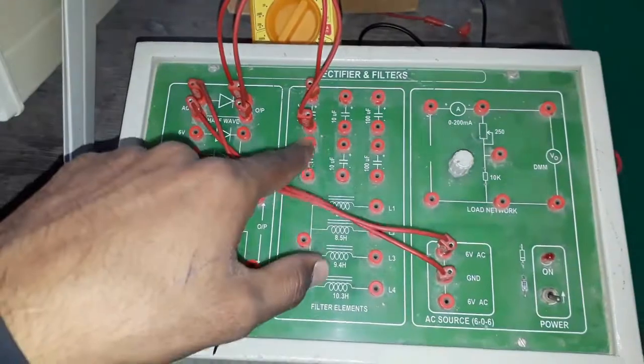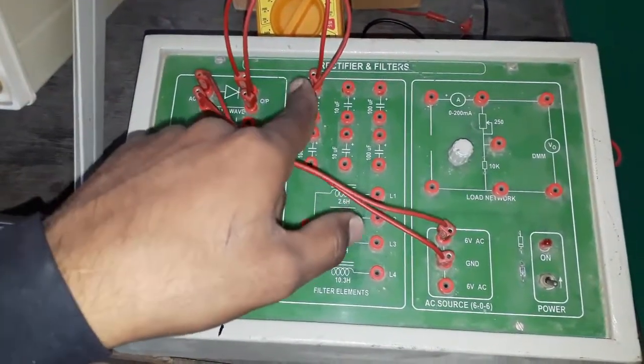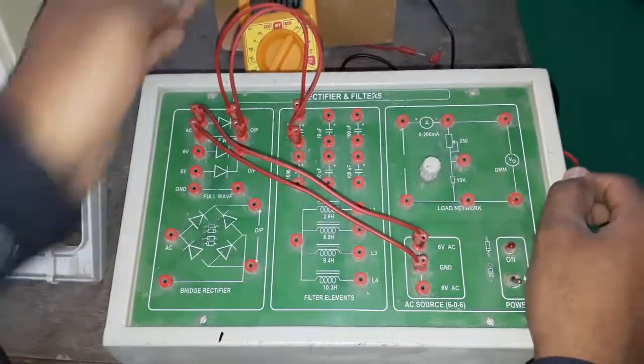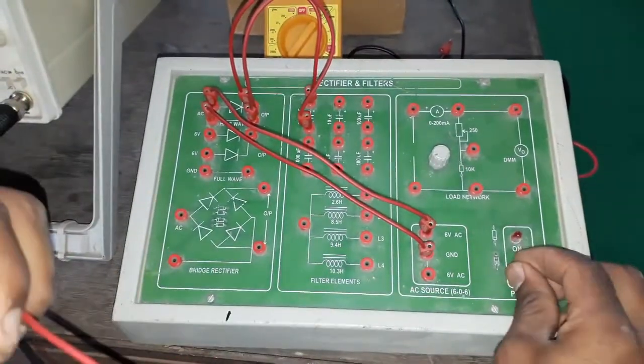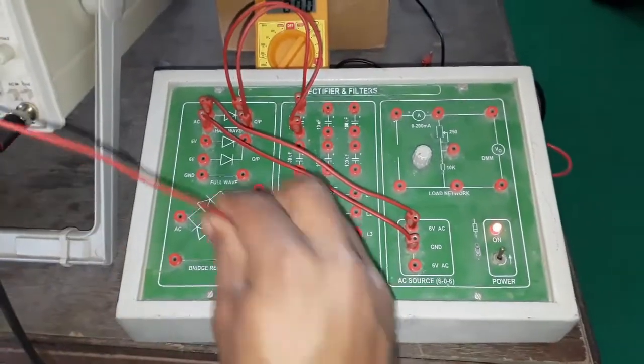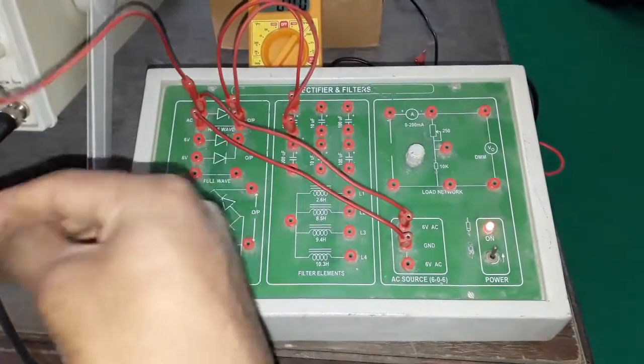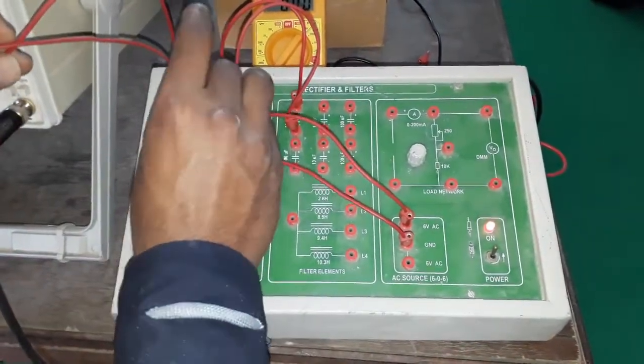By connecting these filters I can neglect the ripple factor. And now I am switching this on. By using this AC source I can look at the AC signals.